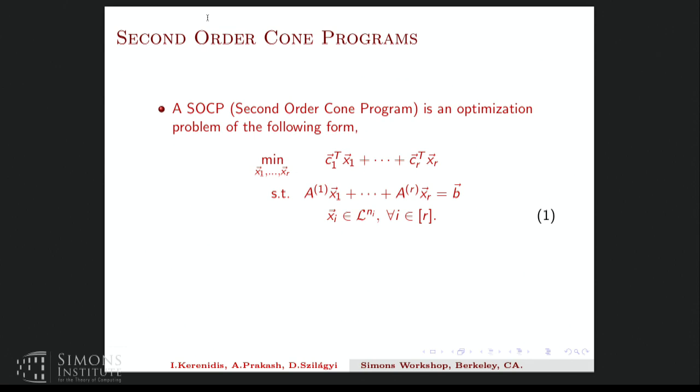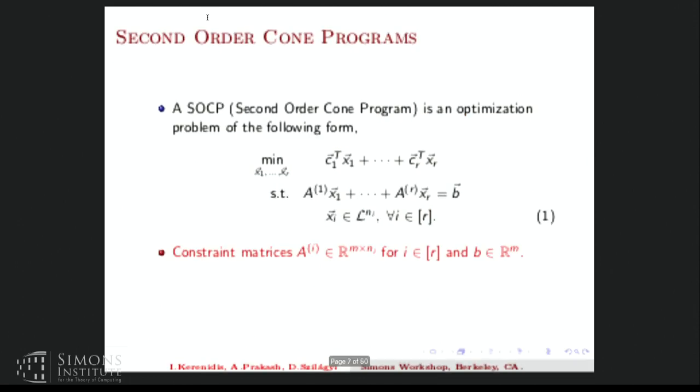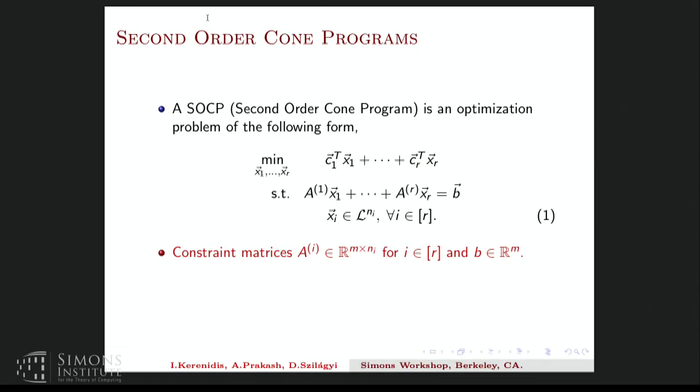So let's give a formal definition of SOCP. So in its general form, it's an optimization problem over a product of Lorentz cones. So I'll write the more compact description shortly in the next slide, but let's see a more expanded description. So it's minimizing a linear function where you can think of these components as lying in different Lorentz cones. So it's a C_1 transpose x_1, C_2 transpose x_2, and so on. And then there are linear constraints. The constraint matrices A_I, which belong to R^m times N_i for i and R. And the conic constraints are that each x_i belongs to these Lorentz cones.